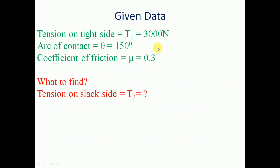The given data: the tension on the tight side T1 is equal to 3000 N. Arc of contact theta is equal to 150 degrees. Coefficient of friction mu is equal to 0.3. We need to find the tension on the slack side, that is T2.